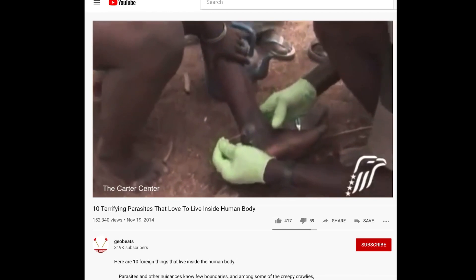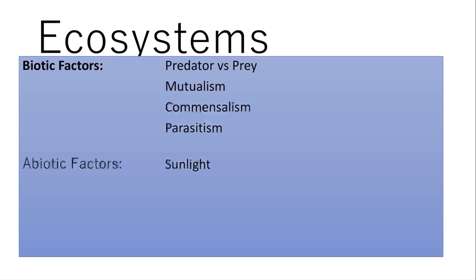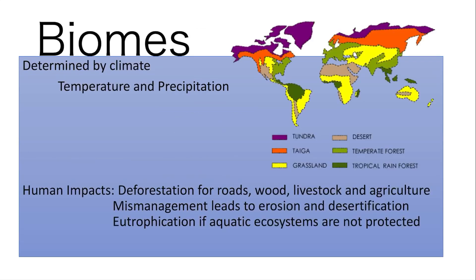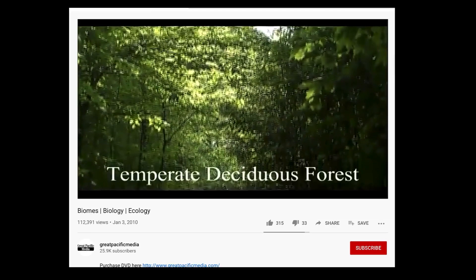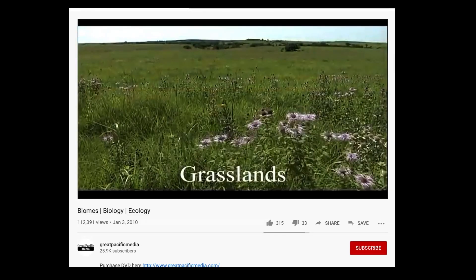Ecosystems also contain abiotic factors — non-living things like the amount of sunlight, rainfall or precipitation, and soil types. This leads us to biomes. Biomes are similar because of their temperature and precipitation, so they have similar plants and animals. They differ in their sensitivities. We impact them by building roads, having livestock overgraze, through agriculture, erosion, desertification, and eutrophication. Tropical rainforests are just one example.